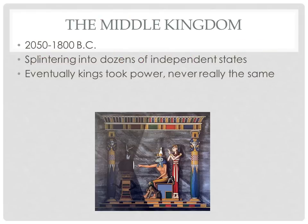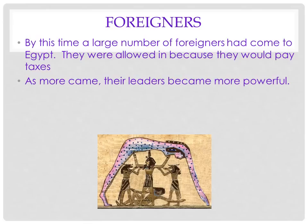Then came the Middle Kingdom. This is a very oversimplified version, but there was splintering into dozens of independent states and the government became decentralized. In order to collect more taxes, they let more foreigners in — even though they didn't like foreigners very well.